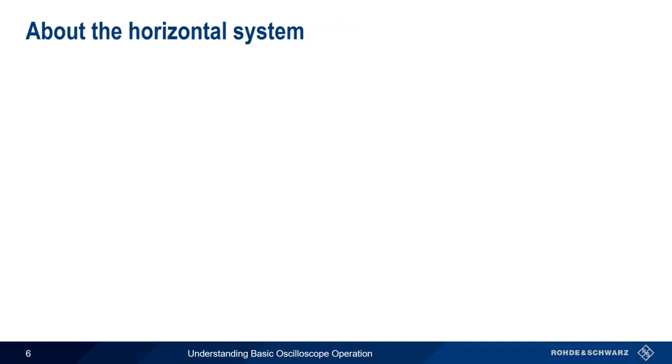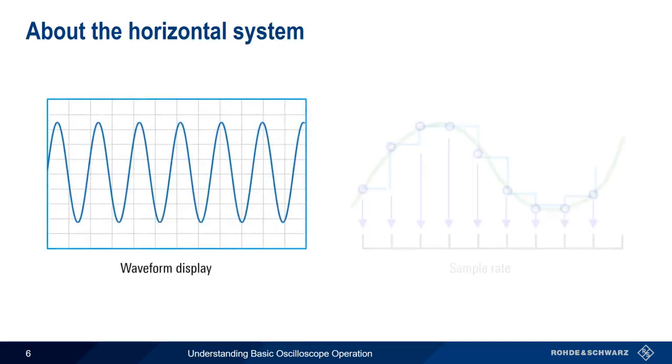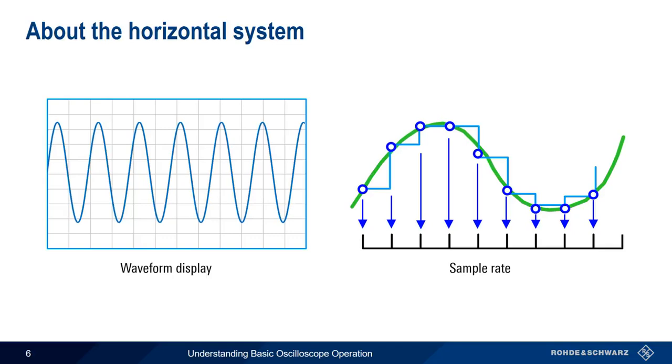When it comes to the horizontal system, there are really two separate topics or aspects that we need to understand. These are waveform display and sample rate. Let's start with waveform display.